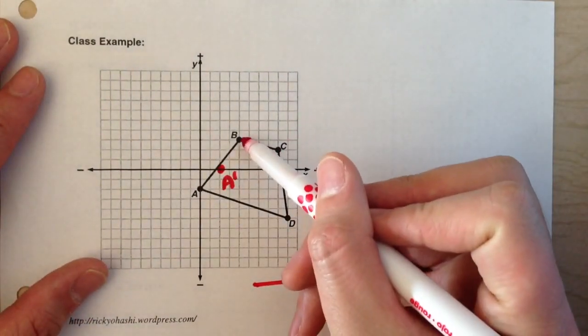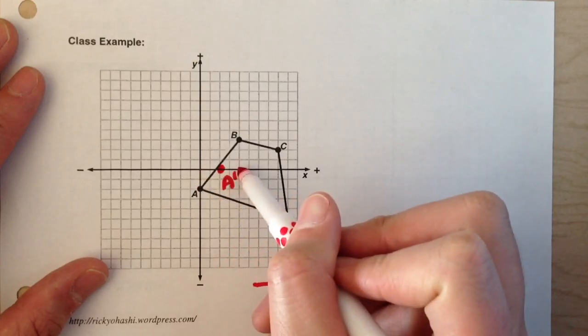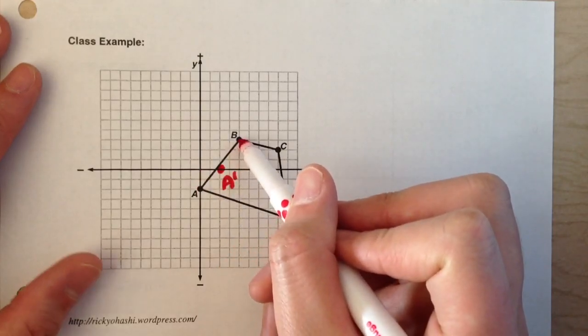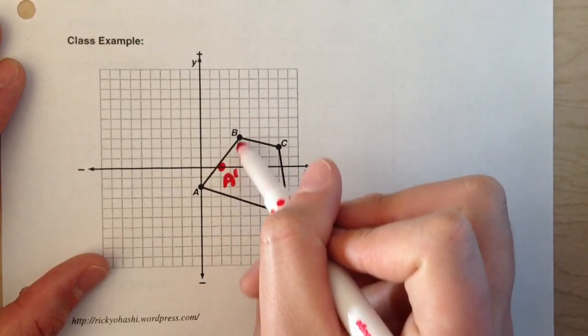I'll do point B. Notice how point B right now is four steps to the right and three steps up above the origin. So from the origin, four steps right, three steps up.